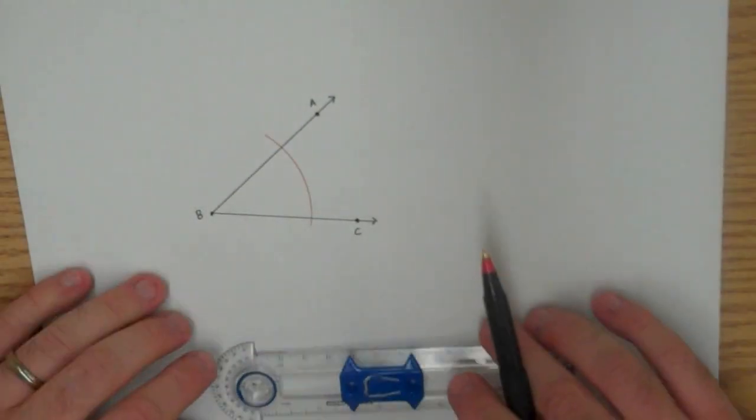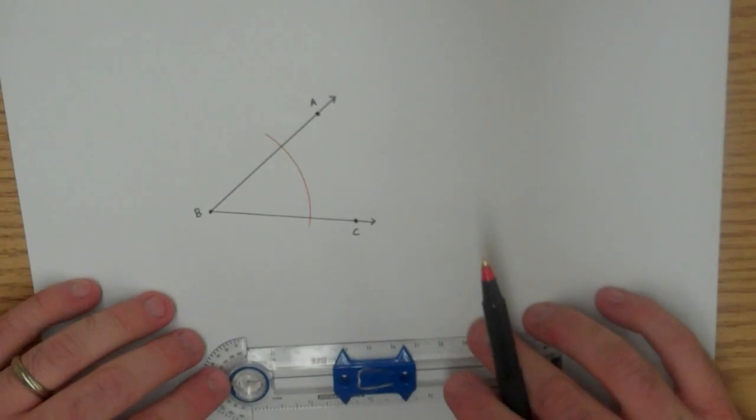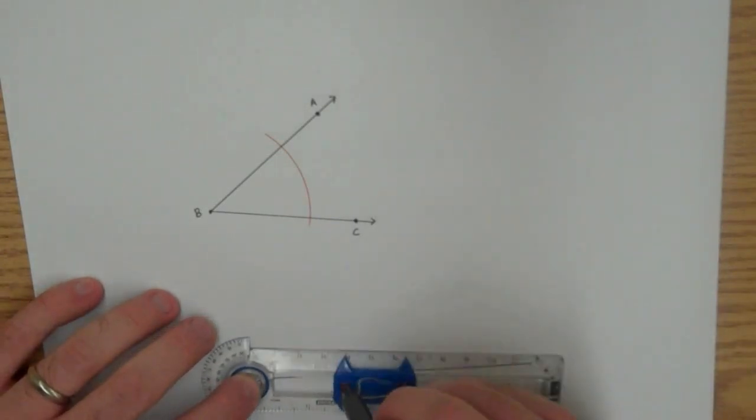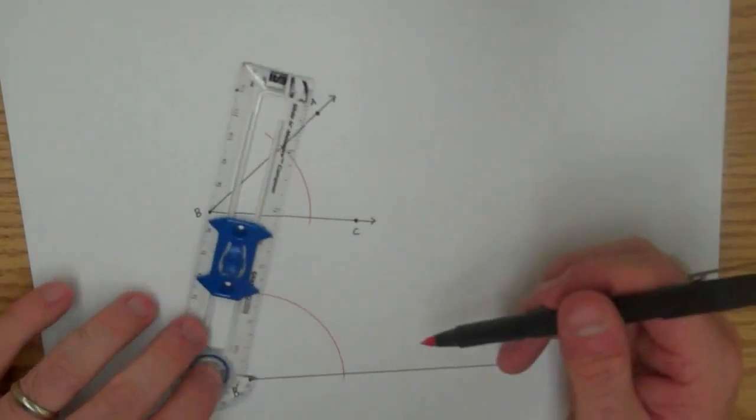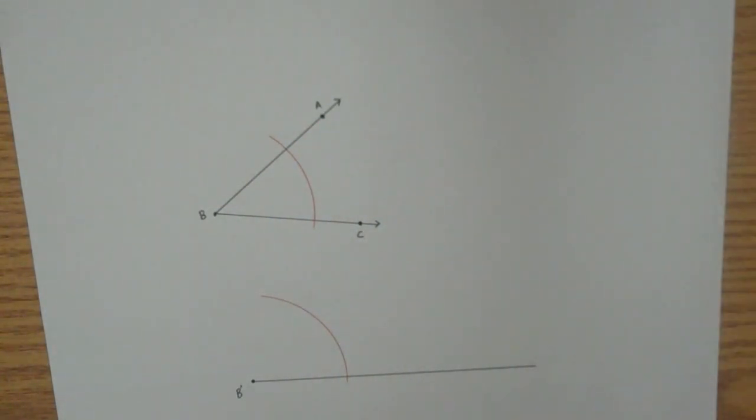And without changing the compass, we want to construct a similar arc right down here. So that's what I have so far.